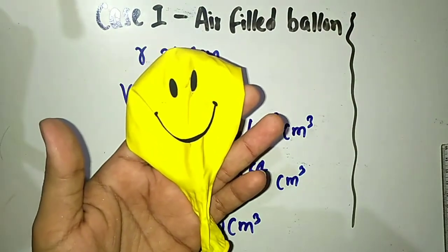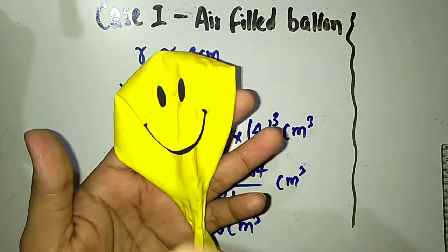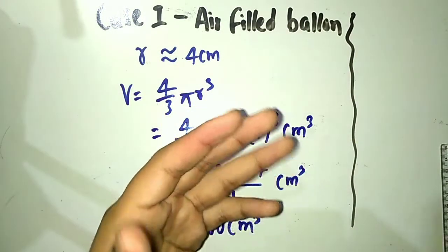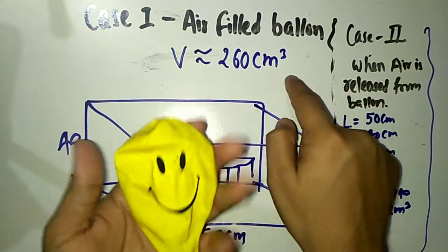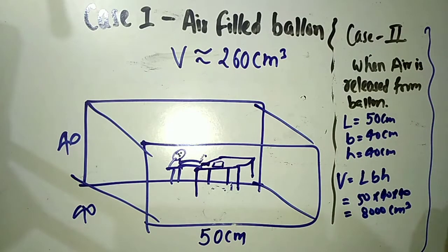This was Case 1: the balloon filled with air and its volume was 260 cm³. Now for Case 2: when the air is released from the balloon, the air goes into the room.